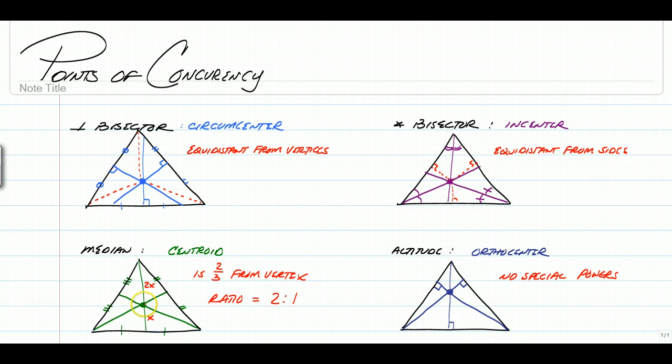Every time you have a centroid on a median, it will split the median into a ratio of two parts to one part, or the centroid is two-thirds of the way from the vertex to the other side.